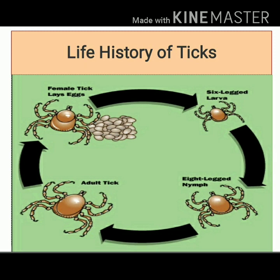The next stage in development is the nymph. The nymph stage resembles the adult stage and has four pairs of legs. Nymphs, like larvae, also require a blood meal. There is only one nymphal stage in the life history of hard ticks, whereas there are five nymphal stages in the life history of soft ticks. The final stage is adult. The time required from egg to adult is about 2 months for hard ticks, whereas it is about 9 to 10 months for soft ticks.